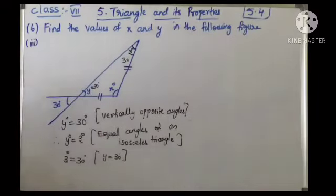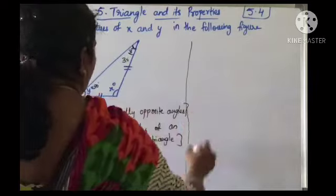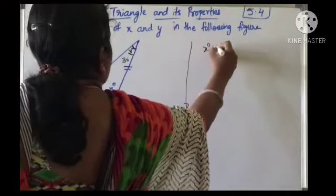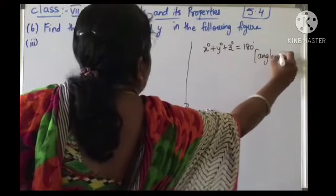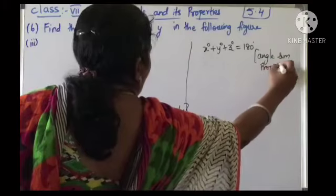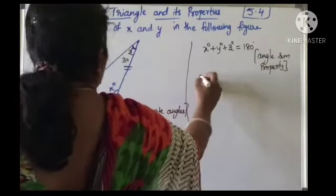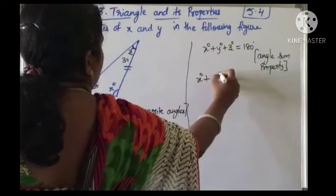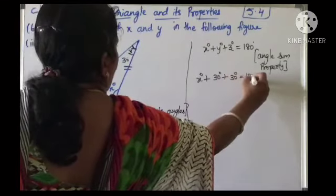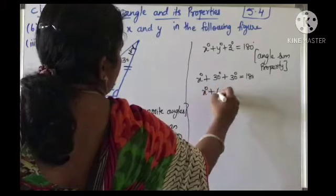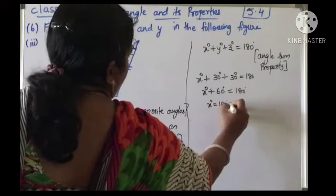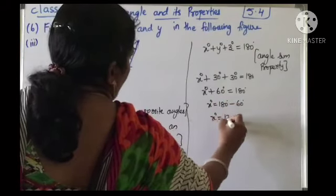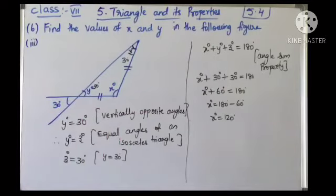Now consider this triangle and use the angle sum property. That is x degrees plus y degrees plus z degrees equals 180. x is unknown, y is 30 degrees, z is 30 degrees. So x plus 30 plus 30 equals 180, which means x plus 60 equals 180. Therefore x equals 180 minus 60, which is 120 degrees. Finally, y is 30 degrees and x is 120 degrees.